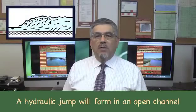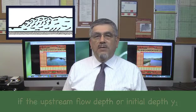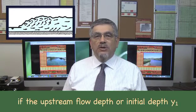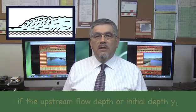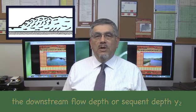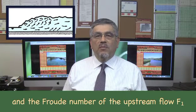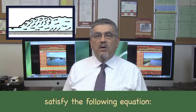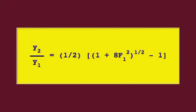A hydraulic jump will form in an open channel if the upstream flow depth or initial depth y sub 1, the downstream flow depth or sequent depth y sub 2, and the Froude number of the upstream flow F sub 1 satisfy the following equation.